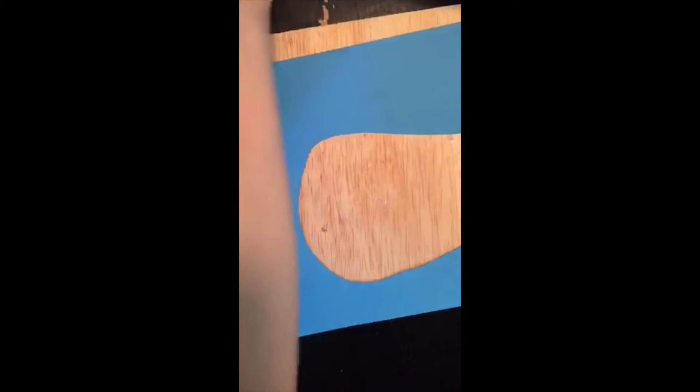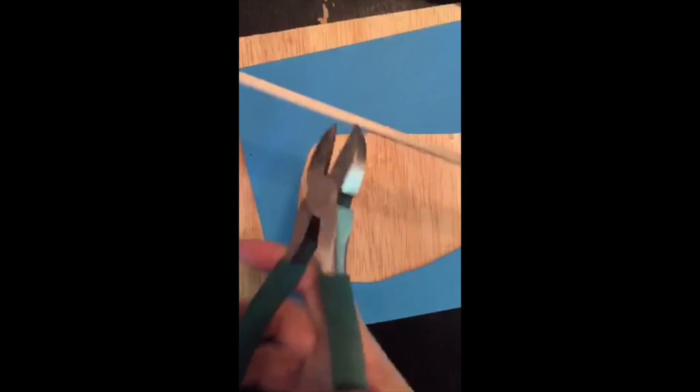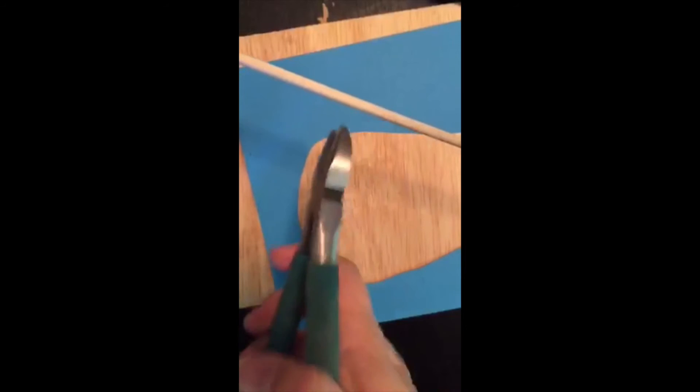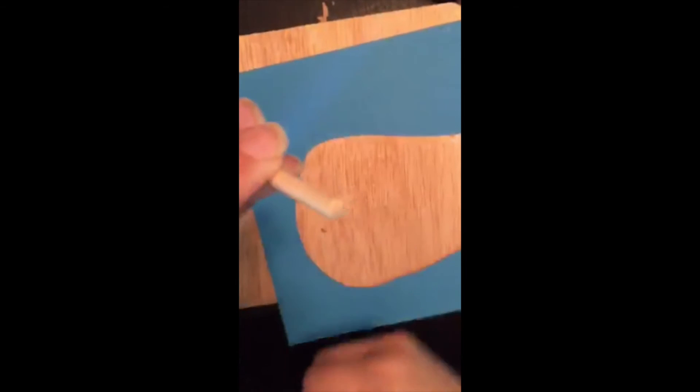So you're going to want to get a dowel rod or two. Get some wire cutters and cut them into a smaller piece. So I'm going to do about a third and so these are what wire cutters look like. Clip it. I would recommend, so you see it came off there.